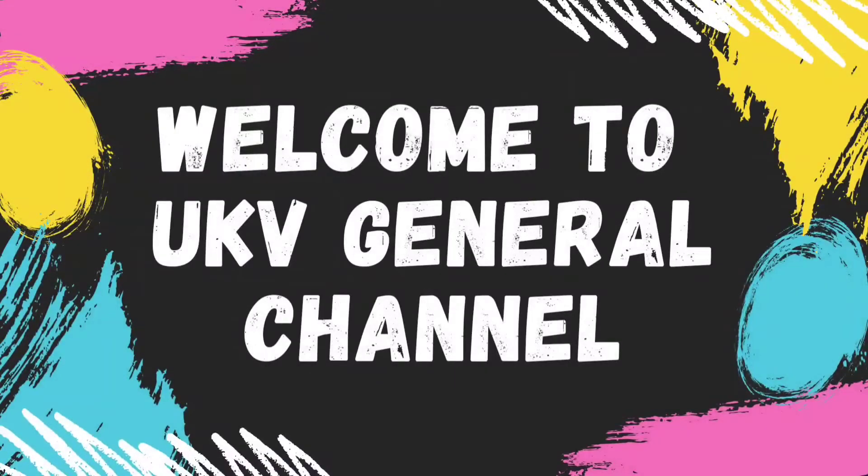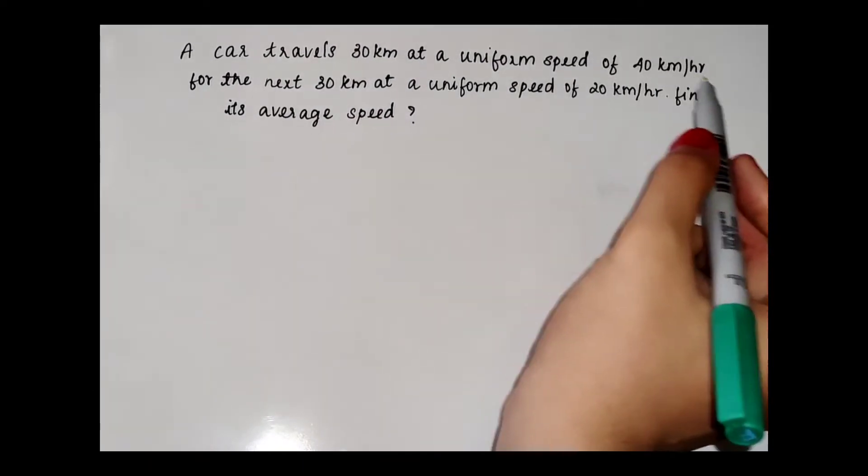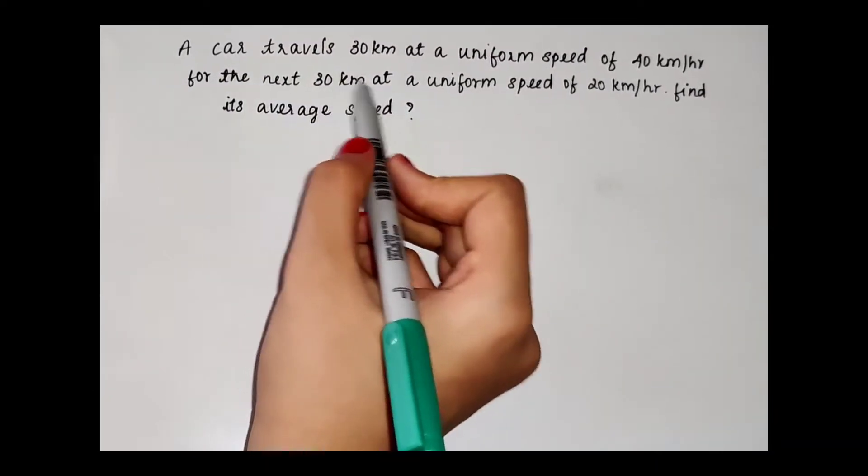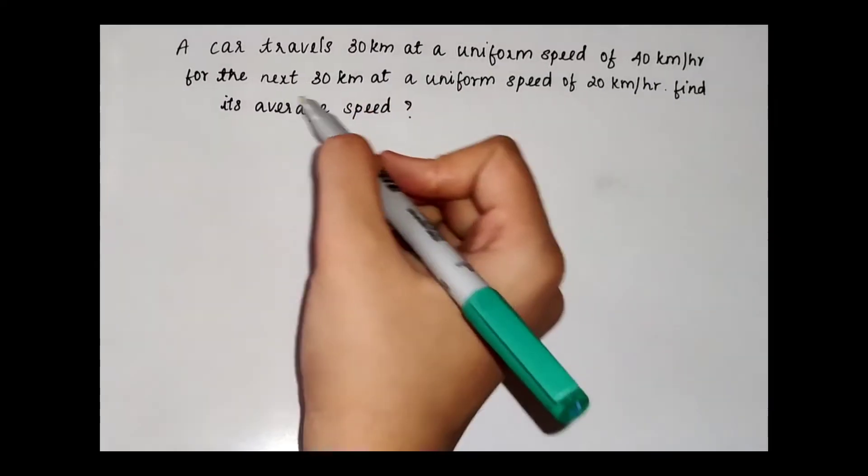Welcome to UKV General Channel. A car travels 30 km at a uniform speed of 40 km per hour. For the next 30 km at a uniform speed of 20 km per hour, find its average speed.